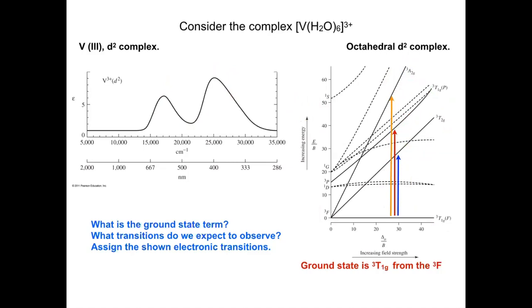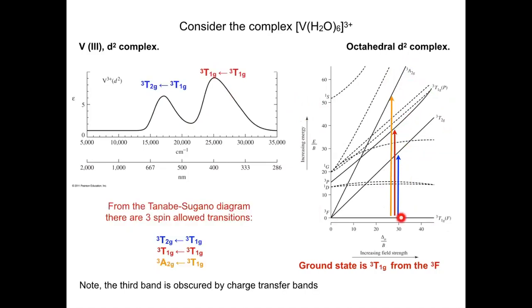That allows us to assign these two peaks as these first two transitions. We can see our lowest energy transition is triplet T1g to triplet T2g. The next one is triplet T1g to triplet T1g. And then triplet T1g to the triplet A2g. Those would be the three possible transitions, two of which we can see on the diagram above.